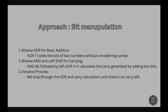The bit manipulation approach uses bitwise XOR for basic addition. XOR adds the two bits without considering carries. Bitwise AND followed by left shift calculates the carry generated by adding two bits. This is done in an iterative process where we loop over the XOR and carry calculation until there are no carries left.